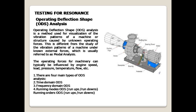Operating Deflection Shape (ODS) analysis is a method used for visualization of the vibration patterns of a machine or structure caused by unknown operating forces. This is different from modal analysis, which studies vibration patterns under known external forces. Operating forces for machinery can typically be influenced by engine speed, load, pressure, temperature, and flow. There are four main types of ODS analysis: Time Domain ODS, Frequency Domain ODS, Running Modes ODS, and Running Orders ODS.